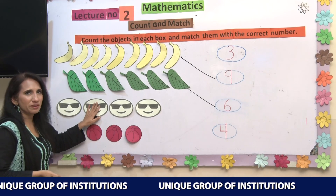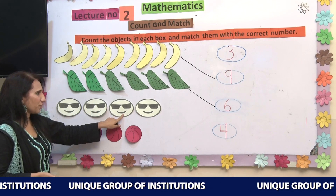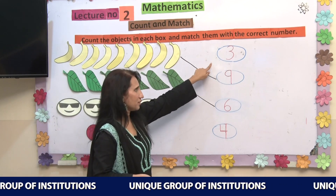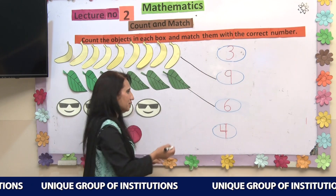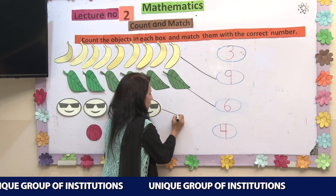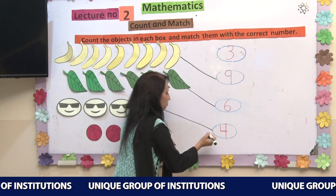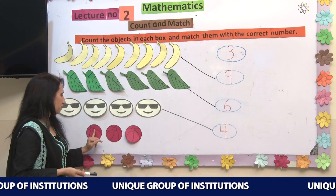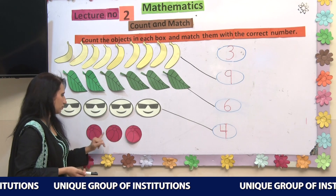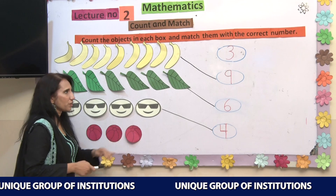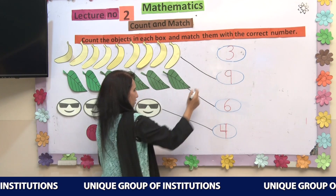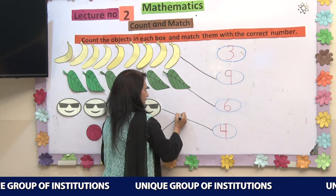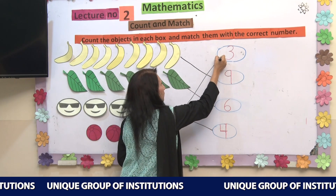Let's count these smileys: 1, 2, 3, 4. Number 4 is here, so let's join this with number 4. Now I am left with only these footballs — 1, 2, 3. There are 3 footballs, and I am left with only number 3, so let's make a straight line to join this with its number.